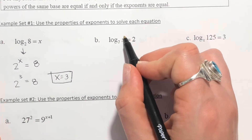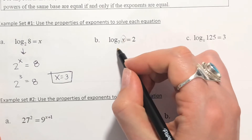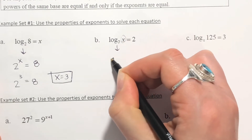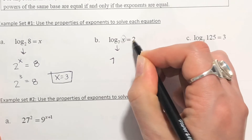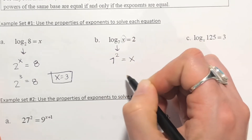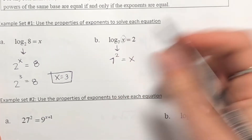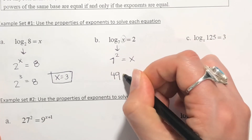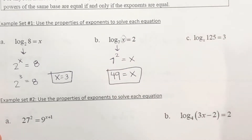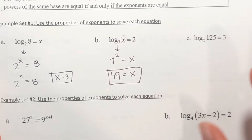On this next one, x is inside the log, so to get it out, we again switch to exponential form. 7 will be the base, 2 becomes the power, and it equals x. That gives us 7 squared, which is 49, so x equals 49. Switching from log form to exponential form makes it a lot easier to solve.